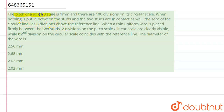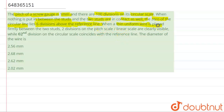The question says that the pitch of the screw gauge is one millimeter and there are 100 divisions on the circular scale. When nothing is put between the studs, the zero of the circular scale lines six divisions above the reference line — that means there is a positive error. When the thin uniform wire is placed firmly between the two studs, two divisions on the pitch scale are clearly visible.